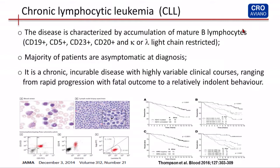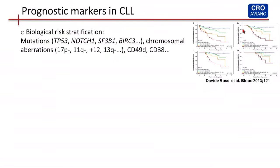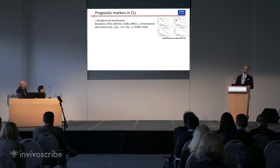In fact, we can distinguish between two main subsets of patients: those who rapidly evolve with increased aggressiveness and refractoriness who require treatment, and those who remain stable for years and do not require treatment. So it's very important to have a prognostic marker to define these two types of patients, in order to decide not to over-treat a patient, or what we say, a watch-and-wait for a patient.